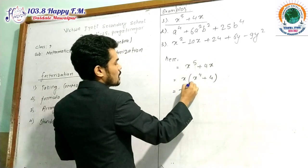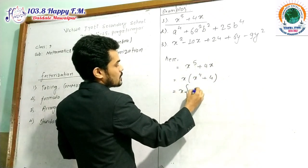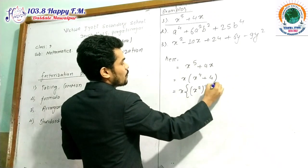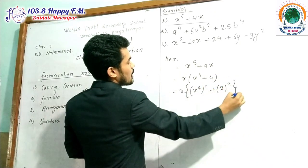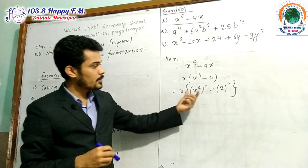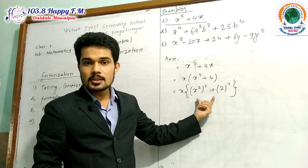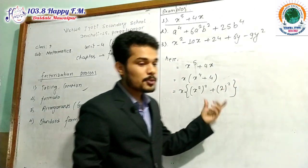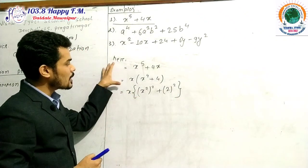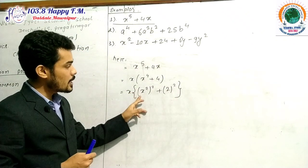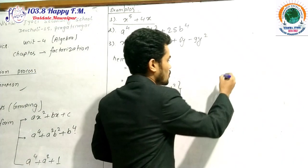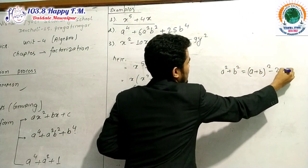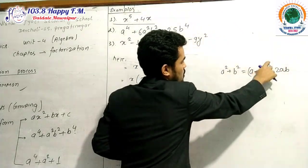Now we can write x⁴ as (x²)² — that is 2 into 2 will be 4 — and 4 can be written as the square of 2. So this algebraic expression is in the form A² + B². Now, A² + B² does not have a direct factor form, so the formula of A² + B² is (A + B)² − 2AB. It has another form also: (A − B)² + 2AB.